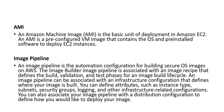Next is Image Pipeline. An image pipeline is the automation configuration for building secure OS images on AWS. The Image Builder image pipeline is associated with an image recipe that defines the build, validation, and test phases for an image build lifecycle. An image pipeline can be associated with an infrastructure configuration that defines where your image is built. You can define attributes such as instance type, subnets, security groups, logging, and other infrastructure-related configurations.